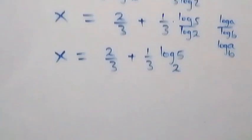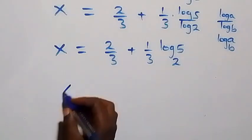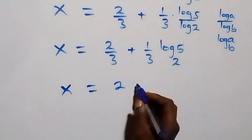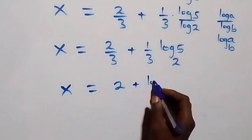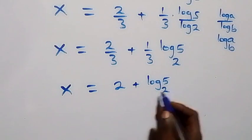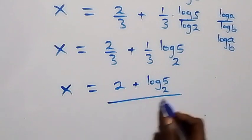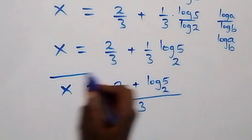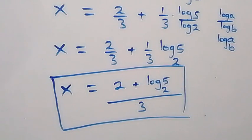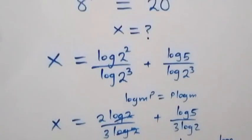We can write this as x equals to 2 plus log 5 to base 2, all over 3. So we have the value of x as 2 plus log base 2 of 5, all over 3. Now let's check if this satisfies the given problem.